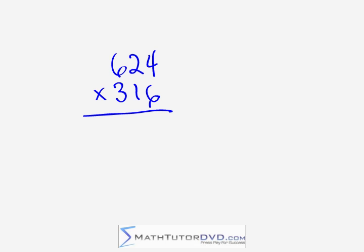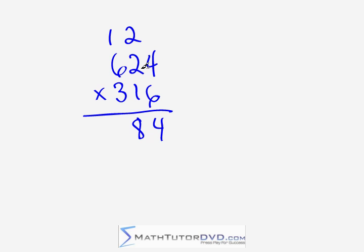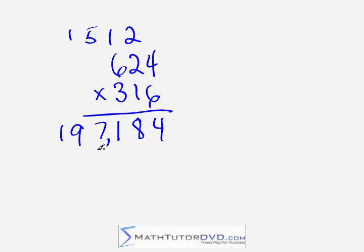Our next problem is 624 times 316. Start in the right-hand column: six times four is twenty-four — put a four, carry a two. Criss-cross: two times six is twelve, plus four is sixteen, plus the carry is eighteen — write an eight, carry a one. Three-way criss-cross: six times six is thirty-six, four times three is twelve; thirty-six plus twelve is forty-eight, plus remaining terms gives fifty-one — put a one, carry a five. Leading criss-cross: two times three is six, plus six is twelve, plus carry gives seventeen — put a seven, carry a one. Leading multiplication: six times three is eighteen, plus one is nineteen. The answer is 197,184.